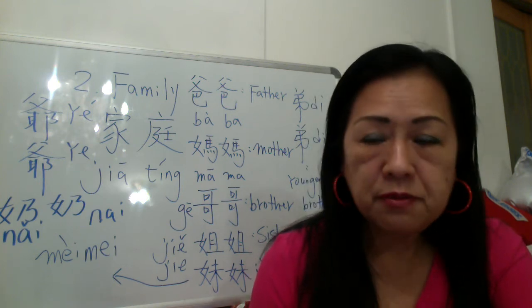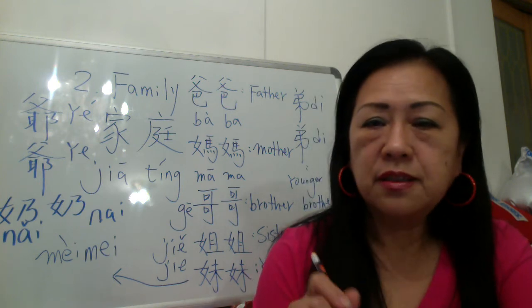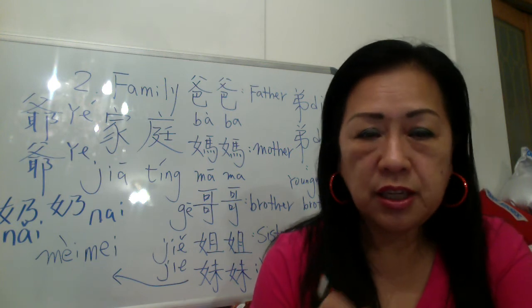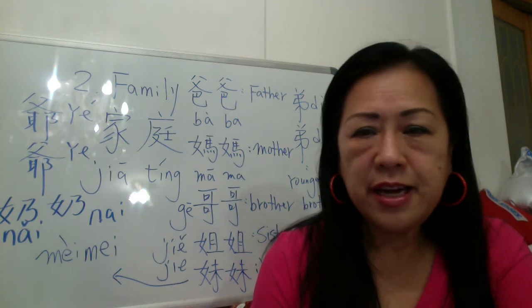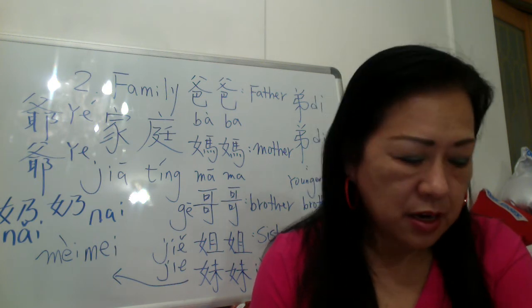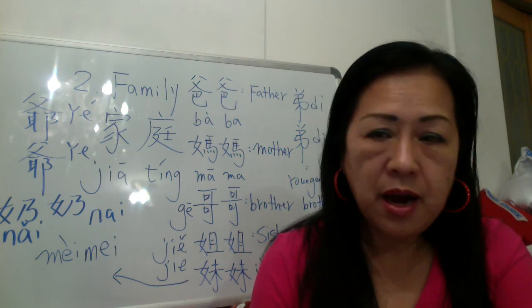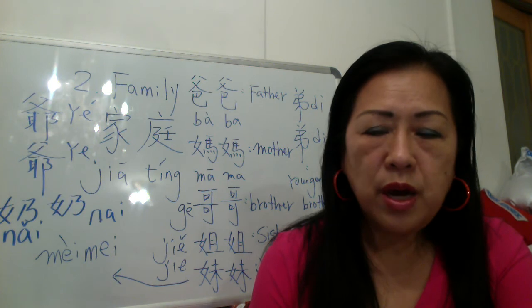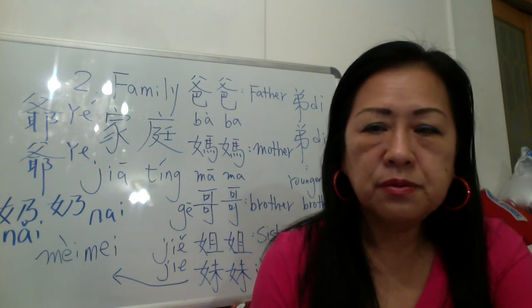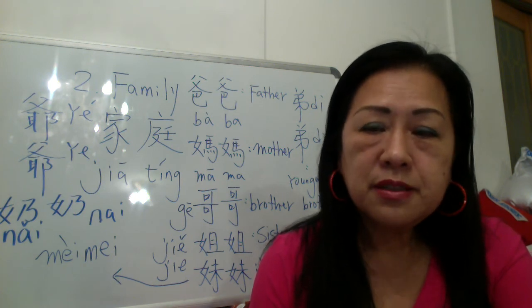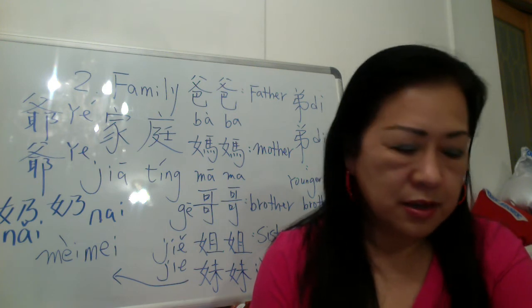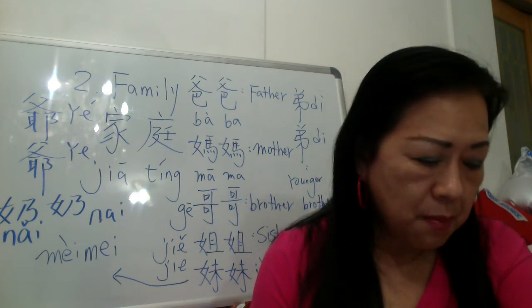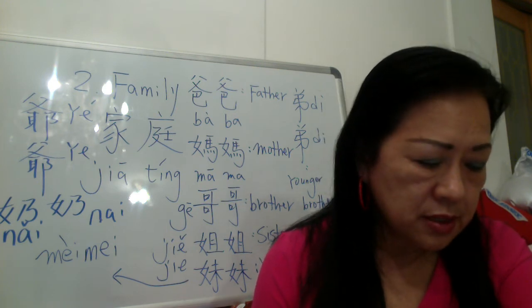Number four: 这, this. Number five: father, daddy — 爸爸. The second syllable you pronounce in the fifth tone, very soft, very gentle: 爸爸，爸爸，妈妈.